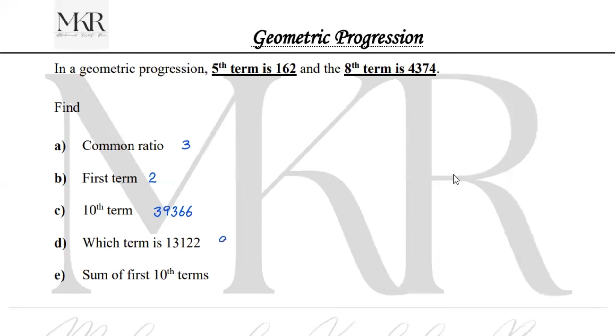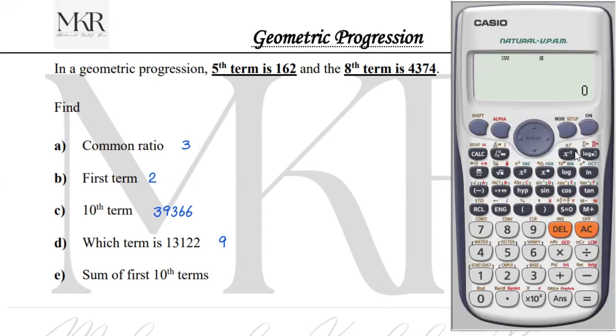To find the sum, first press shift lock to get the sum sign. Then press alpha and bracket close to get x. The values are in the y column. Press shift, one, then five key for y. Apply comma using shift and bracket close. From first term, apply comma again and put 10 to find sum up to tenth term. Press bracket close and equals. The sum of first 10 terms in our geometric progression is 59048.